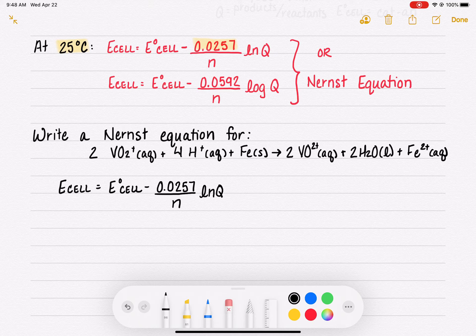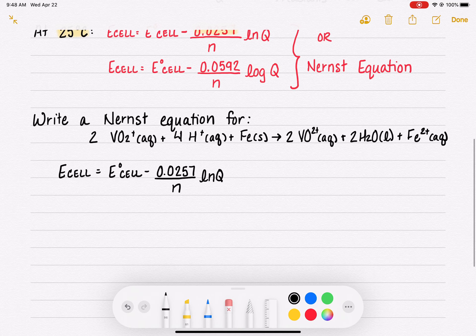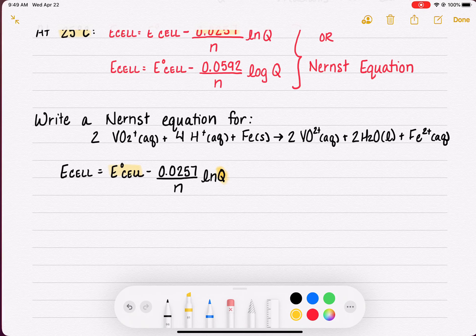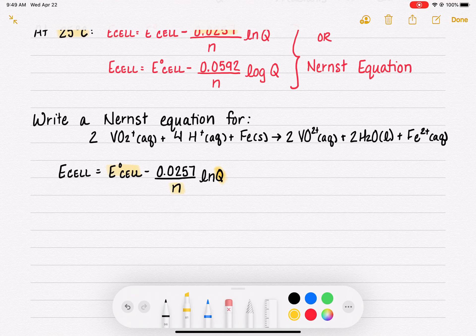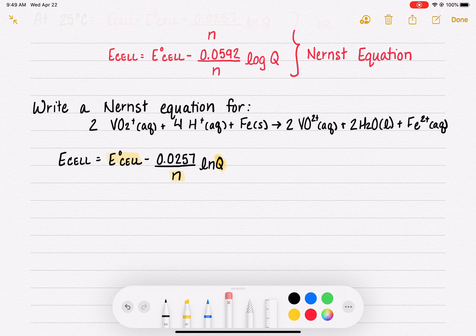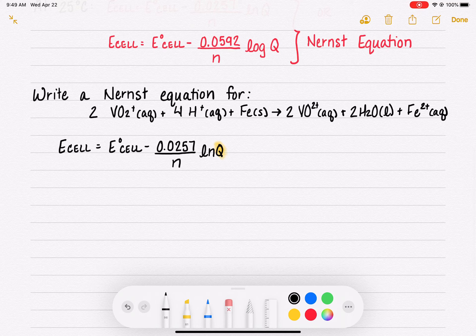When we're talking about setting up or writing the Nernst equation, what we're really focusing on is filling in this Q part. We're going to calculate E°cell the way that we've done all chapter. That's going to be pretty easy for you. And as we calculate or look up the data for calculating Ecell, we're also going to be able to get n from looking at those half reactions. The tricky part here is really focusing on the Q.